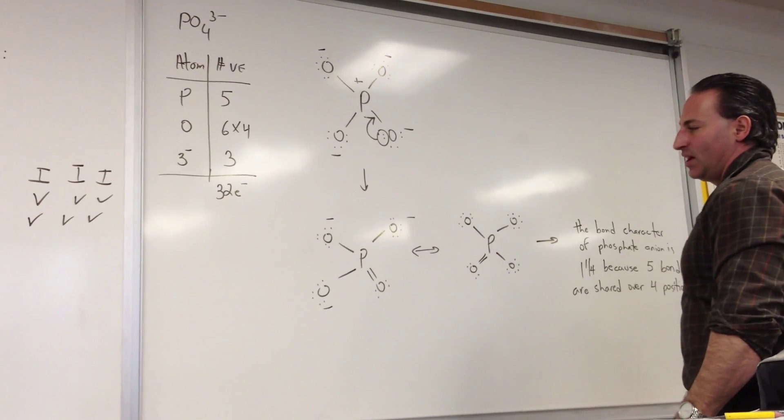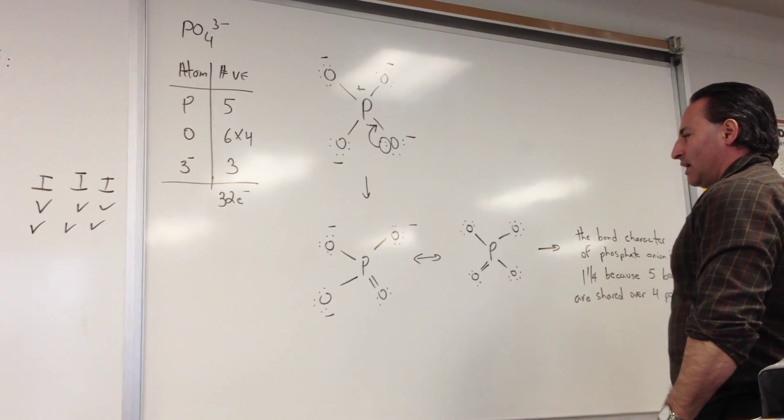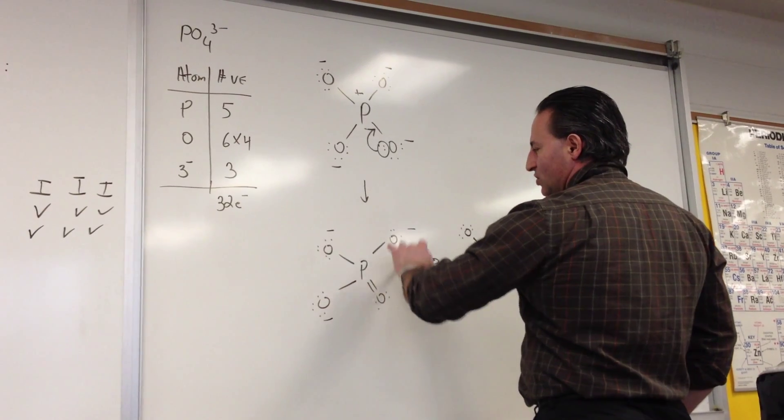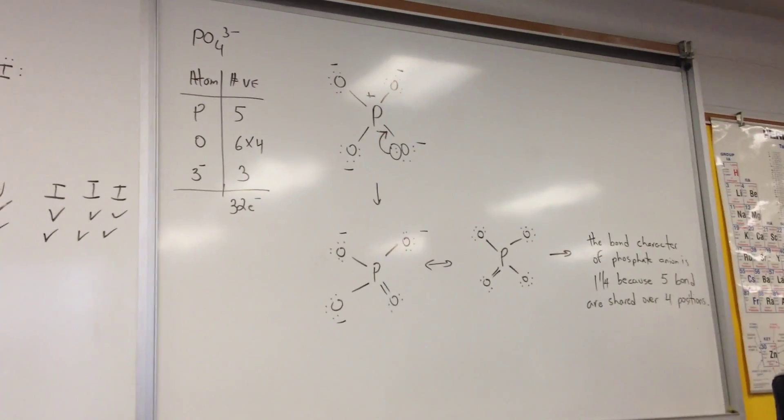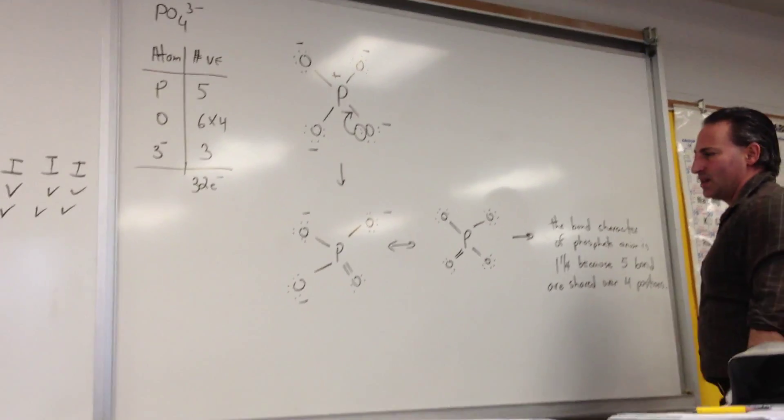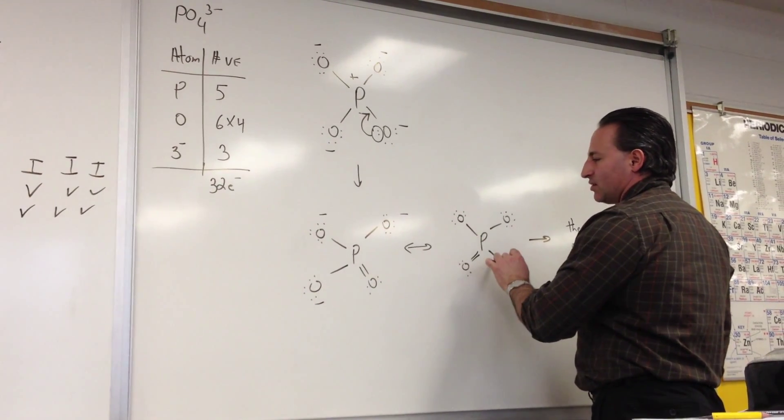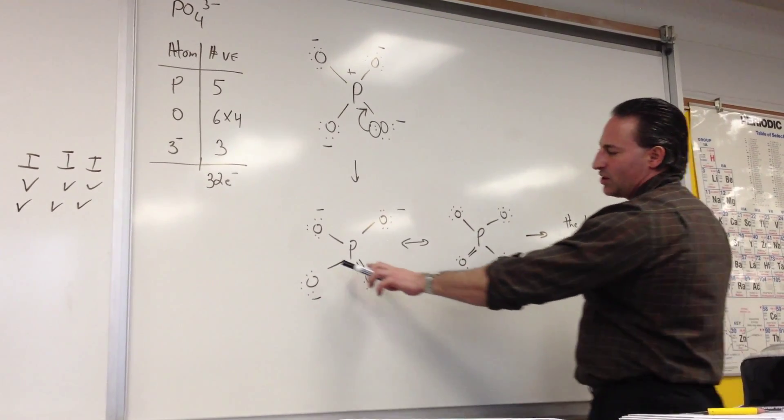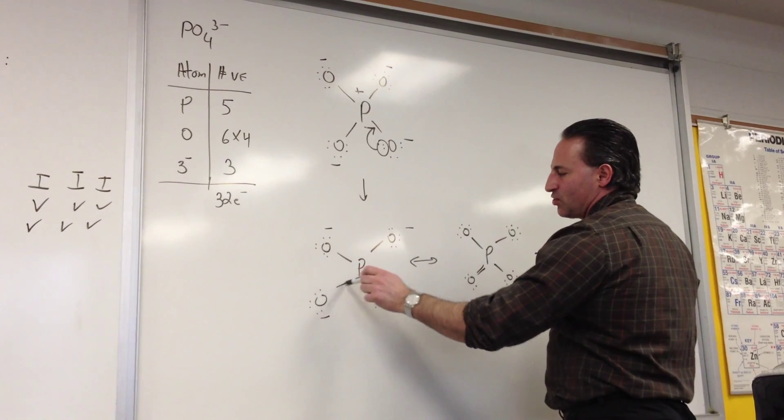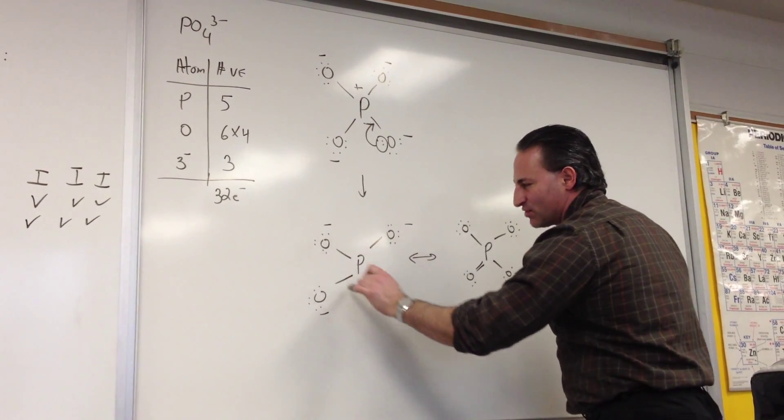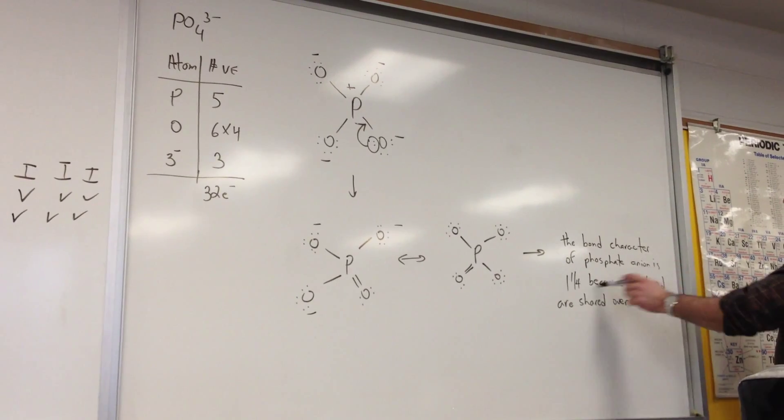But it can accommodate more than 8 because it's got atomic number 15 or higher. That's the sort of cutoff point in the periodic table. The oxygen atoms still have their formal charges, so this whole molecule is -3 overall, just like it's portrayed in the picture for the anion. But what you need to realize is this does not actually exist. And traditionally we draw the different canonical structures, but what you have to realize is that the electrons are moving at two-thirds the speed of light. So they're whizzing around in there and they're actually distributed evenly among those four positions. So what we really have is five bonds distributed over four positions. It's more accurate to say the bond character of phosphate anion is one and one quarter, because five bonds are shared over four positions.